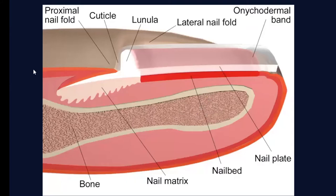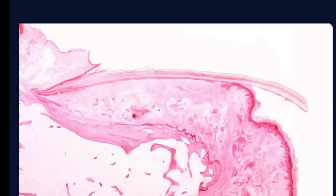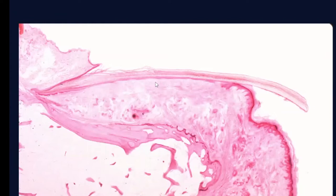This is a blowup of that cartoon. So this is the proximal nail fold. The matrix, which makes the nail plate, extends primarily under the proximal nail fold. The nail bed starts where the matrix stops, and then where the nail bed stops and the nail lifts off is called the hyponychium. This is a sagittal section of a newborn nail. You can see the undersurface of the proximal nail fold — this is nail matrix, this is where the nail bed starts, this is all nail bed. And where the granular layer begins again is the hyponychium.